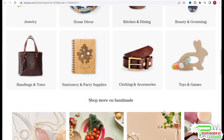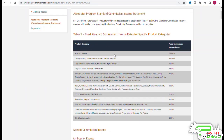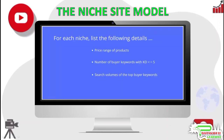There are lots of niches available. Here is how you would want to go about choosing one: make a list of at least five to ten niches, and for each niche list the price range at which products are selling, the number of buyer keywords with a keyword difficulty score of five or less, and the search volume of a few buyer keywords. Choose one or two niches that look really good. Each niche needs to have a few products selling for at least fifty dollars with four and five star reviews, and ideally the demand should not be seasonal.